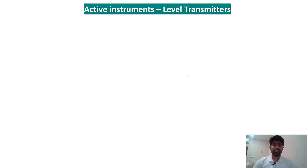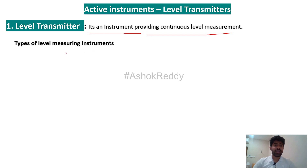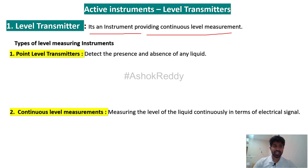First we will see what is meant by a level transmitter. It is an instrument providing continuous level measurement. We have 2 types of level measuring instruments.